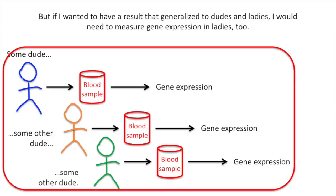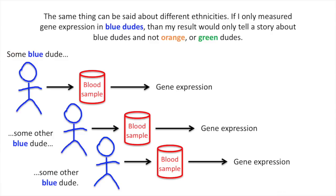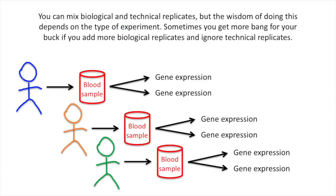But if I wanted to have a result that generalized to dudes and ladies, I would need to measure gene expression in ladies, too. The same thing can be said about different ethnicities. If I only measure gene expression in blue dudes, then my result would only tell a story about blue dudes, and not orange or green dudes, or dudes in general. You can mix biological and technical replicates, but the wisdom of doing this depends on the type of experiment. Sometimes you get more bang for your buck if you add more biological replicates and ignore technical replicates. For example, when doing RNA-seq, it's better to do biological replicates rather than technical replicates. I have a StatQuest that explains why this is, so check it out. Fundamentally, it depends on how much is already known about the type of experiment you want to perform.